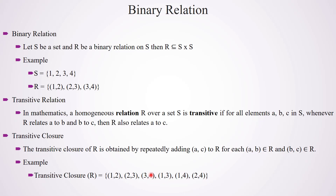Now we look at (3,4) and (1,3): 1 is related to 3 and 3 is related to 4, so I can write 1 is related to 4. So (1,4) is also introduced to the transitive closure of R. Here I can find one more relation: 2 is related to 3 and 3 is related to 4, so I can write 2 is related to 4 also. So this is the transitive closure of relation R — with the help of transitive properties we are generating as many relations and including them in the transitive closure set.